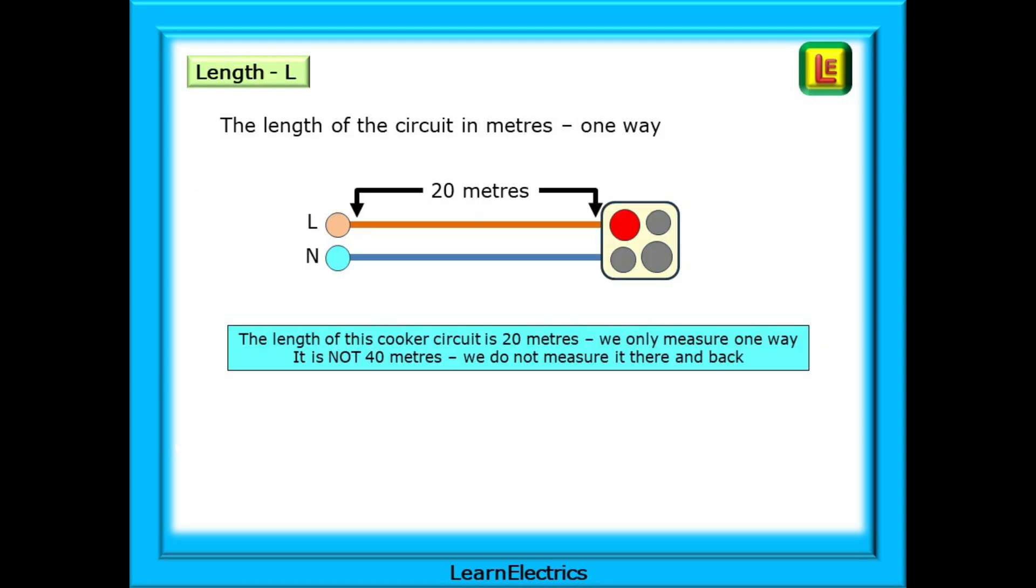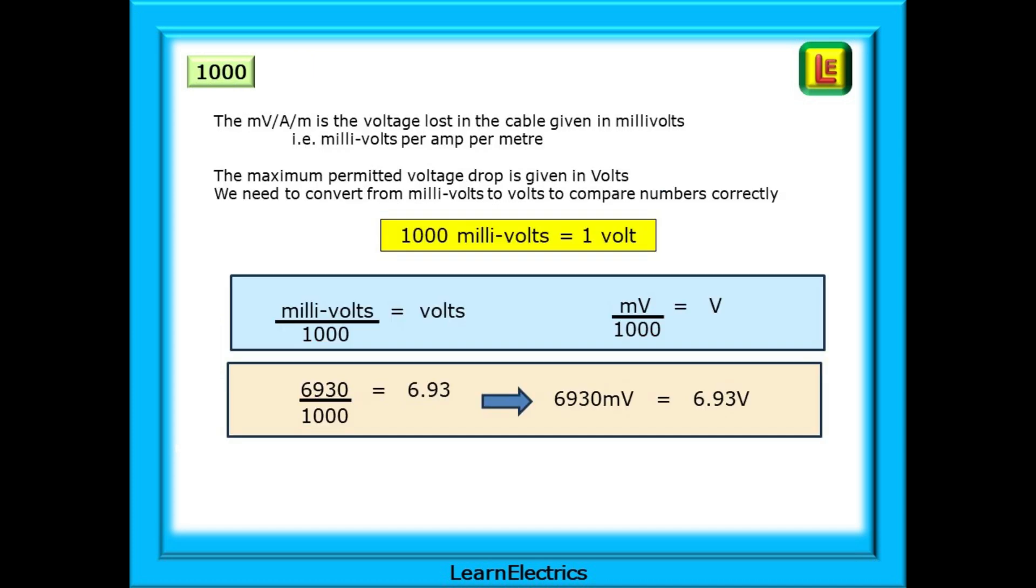Length is simply the meters from the consumer unit to the cooker. The length of this cooker circuit is 20 meters. We only measure one way. It is not 40 meters. We do not measure it there and back. The number 1000 matters. The MVAM number is the voltage lost in the cable given in millivolts. That is, millivolts per amp per meter. But the maximum permitted voltage drop is given in volts. We need to convert from millivolts to volts to compare numbers correctly. And we do this by dividing our answer by 1000. Shown here, our answer is 6930 millivolts. Divide this by 1000 to get 6.93 volts.